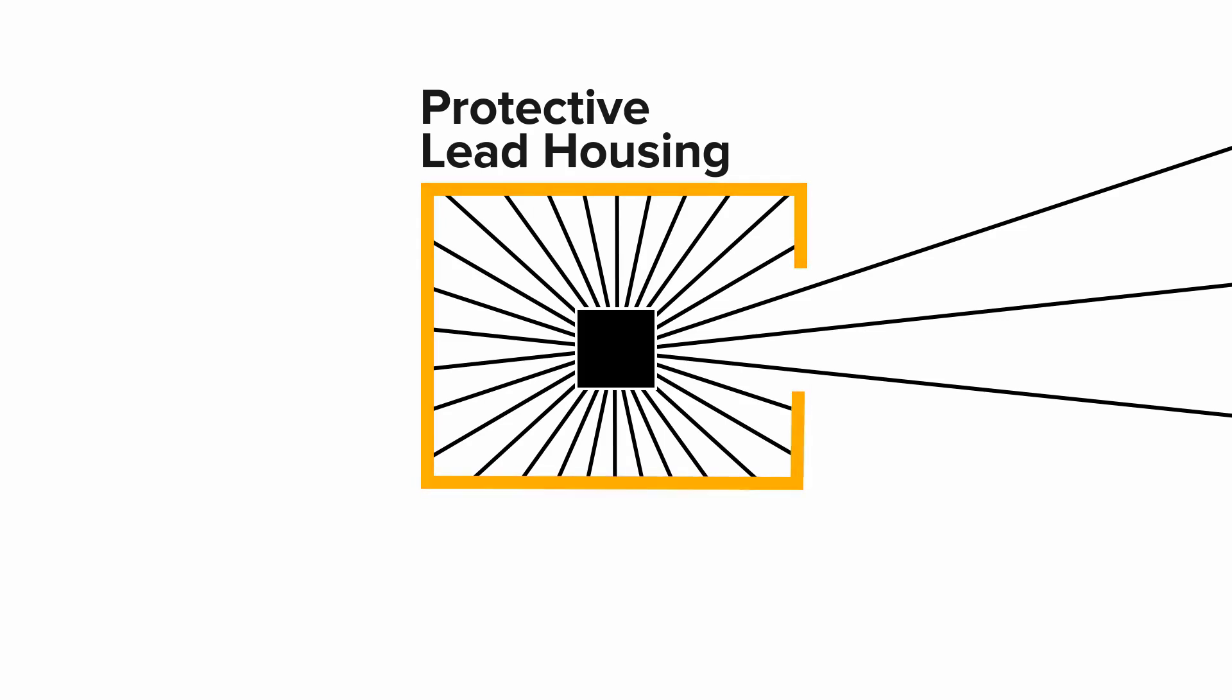The lead housing absorbs all of the extra X-ray photons that we don't actually need. X-rays travel in straight lines, so they will keep on going until we put something in the way to stop them. If they don't interact with something, they'll just keep on going. So we use the protective housing to protect the patient and other people in the room from unnecessary radiation.